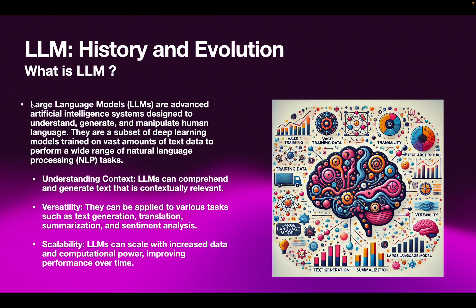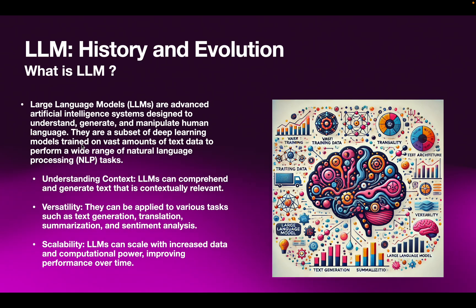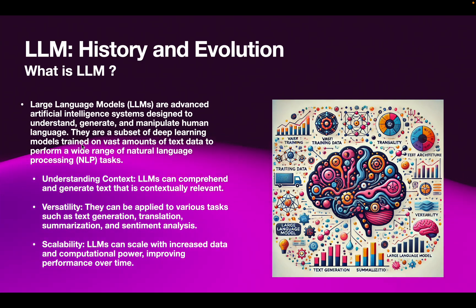LLMs are really a subset of deep learning models. Deep learning models have billions of parameters, each with some weights, and the model learns from its mistakes. LLMs are trained on vast amounts of text data and can perform a wide range of natural language processing tasks — sentiment analysis, text generation, translation, summarization, and much more.